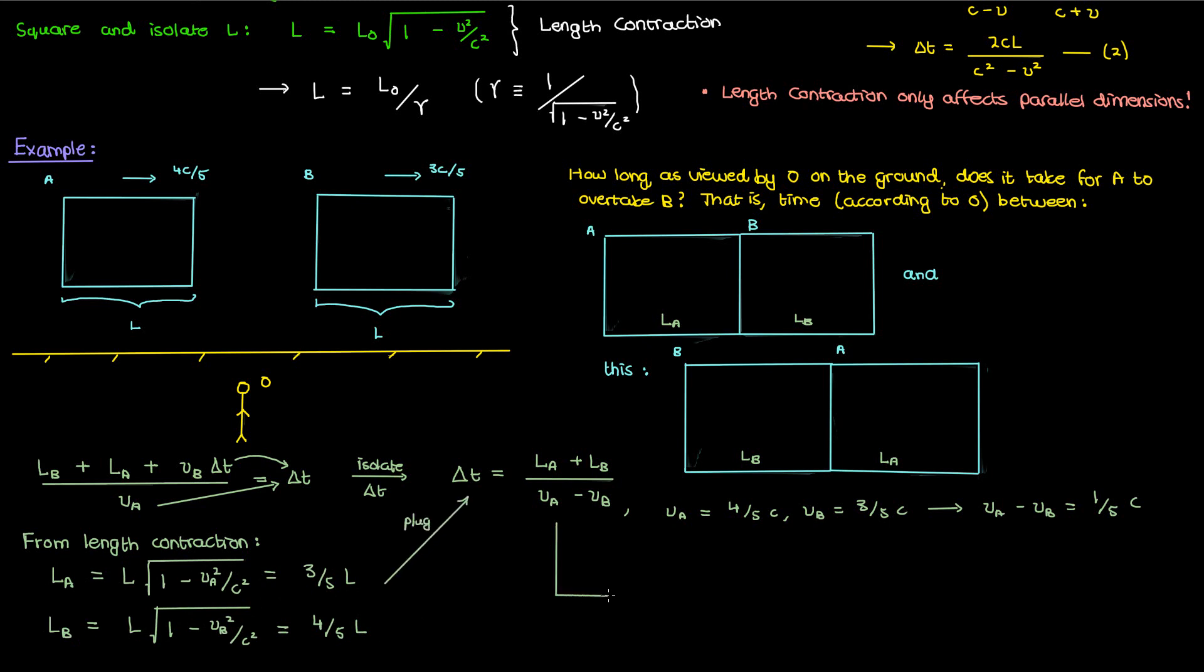When we plug all of this into the equation for delta T we'll find that delta T equals 7L over C and that is the time it takes for the train A to completely overtake train B in the reference frame of observer O.